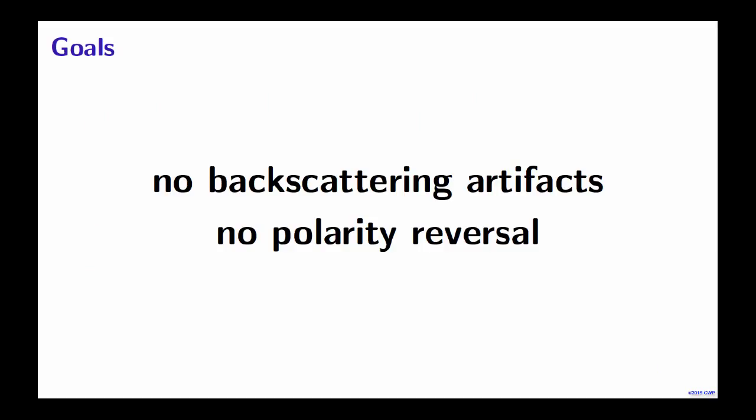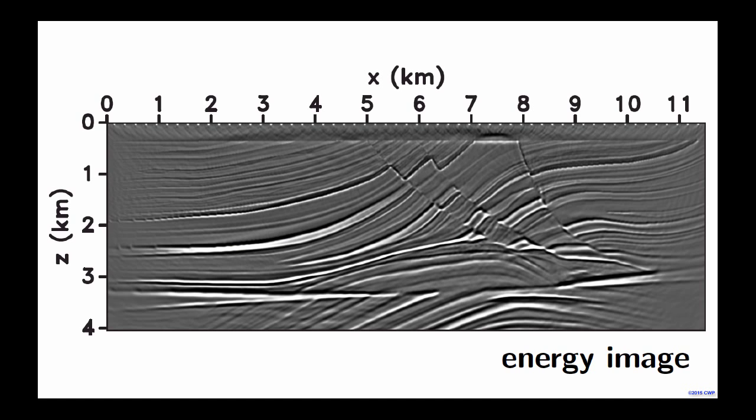My objective is to seek an elastic image condition — a seismic image condition — that has no backscattering artifacts, or at least attenuates those artifacts, and has no polarity reversal as well. We can obtain these using the energy norm, as you can see by this stacked image. We can notice that we have no backscattering artifacts; all the reflectors are very well seen because we do not have the low wave number artifacts present in conventional images. Also, no polarity reversal — the stacking is constructed coherently over shots.